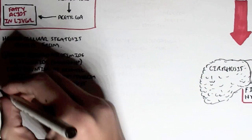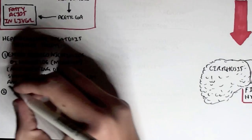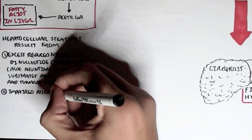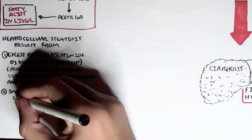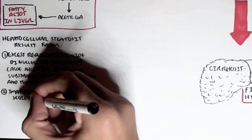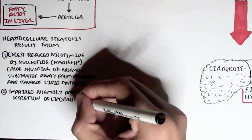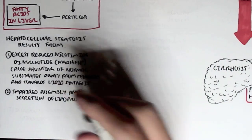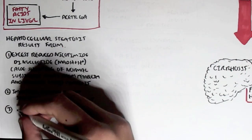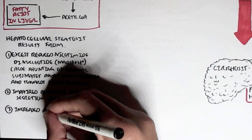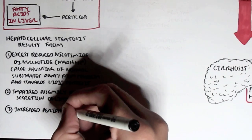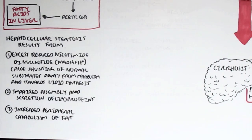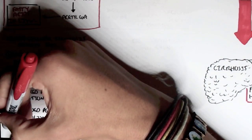Two, hepatocellular steatosis results from impaired assembly and secretion of lipoproteins — essentially, the lipids just accumulate in the liver because lipoproteins can't take lipids out. And three, there is increased peripheral catabolism of fats.